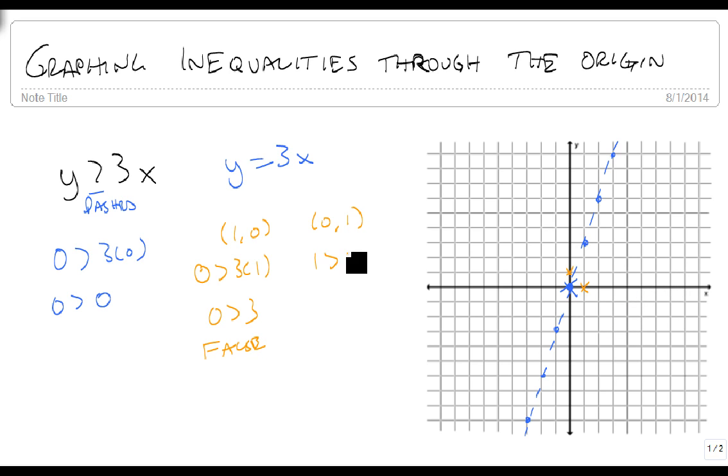(0,1) gives 1 is bigger than 3 times 0, 1 is bigger than 0, which is true. So I do shade over here. This whole region gets shaded. And so since I now know that this region is shaded, I'm done. Notice that just meant I had to pick another point rather than (0,0) to do that.